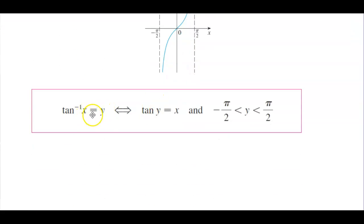So tangent inverse of x is equal to y implies the tangent of y is equal to x, and y is in between negative pi over 2 and pi over 2, but not inclusive.